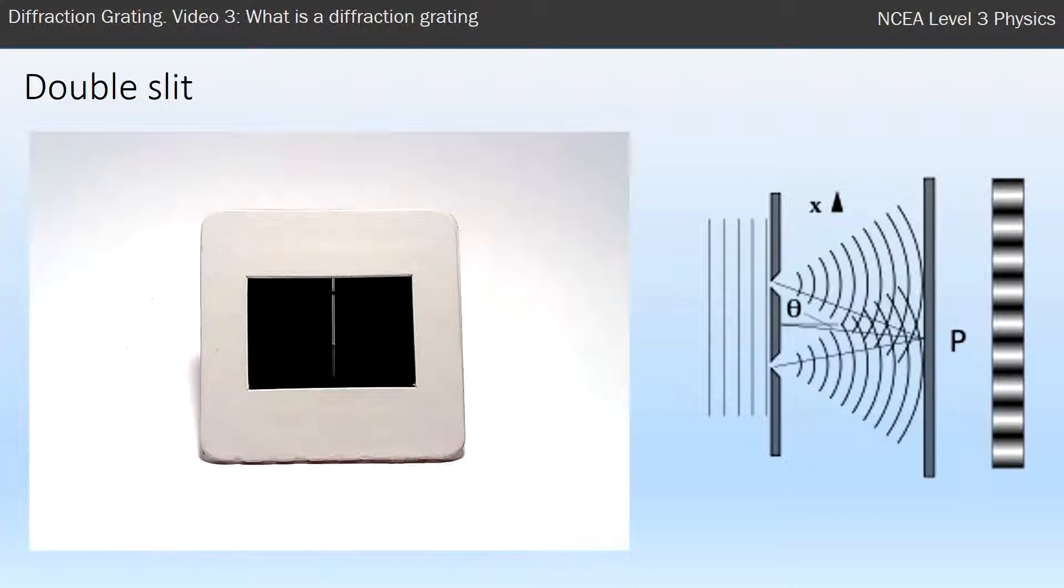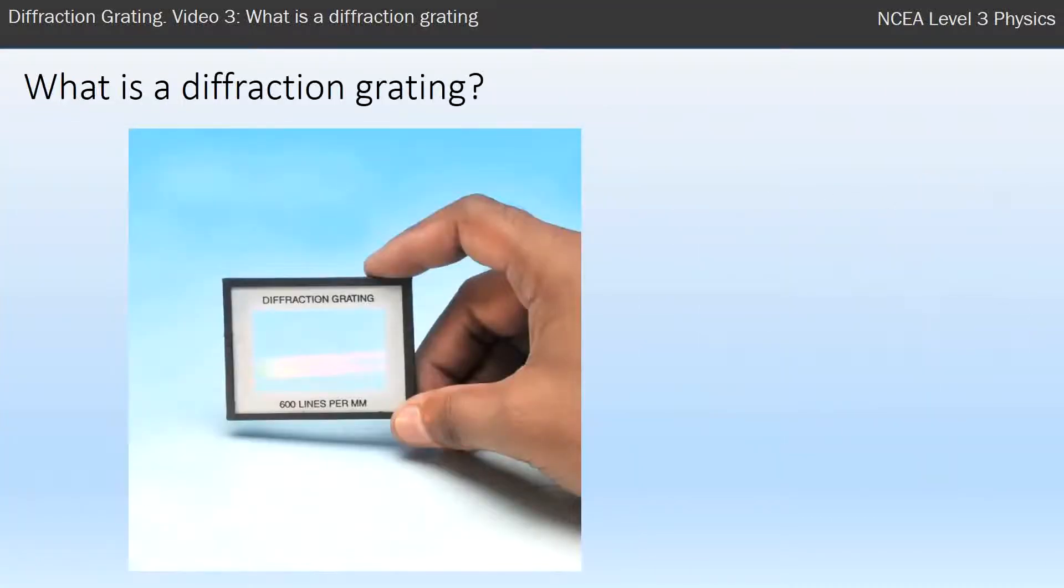A diffraction grating is much harder to see the slits because often with diffraction gratings you get far many more slits per millimeter. In the example in front of us, you can see there's 600 lines per millimeter—600 slits per millimeter. You can't see that with the naked eye.